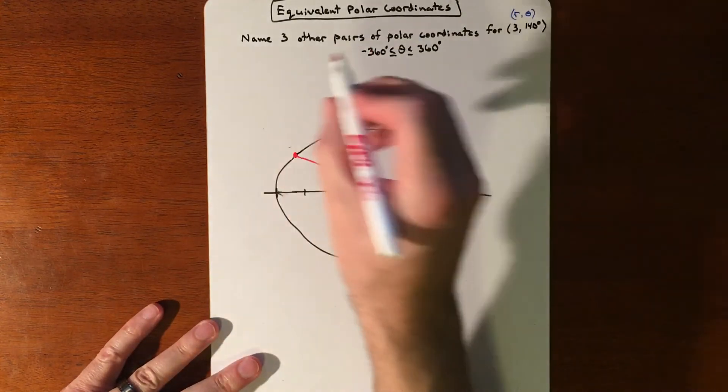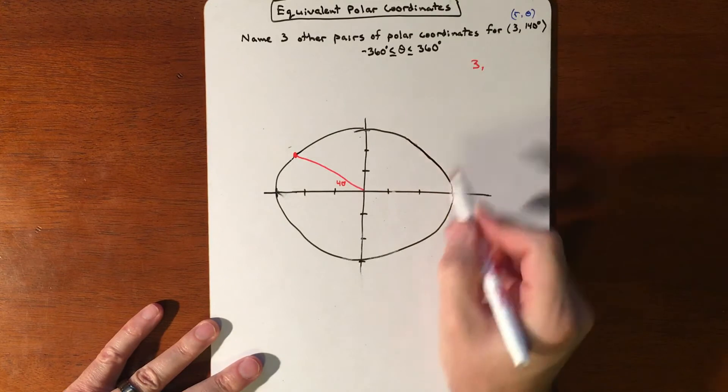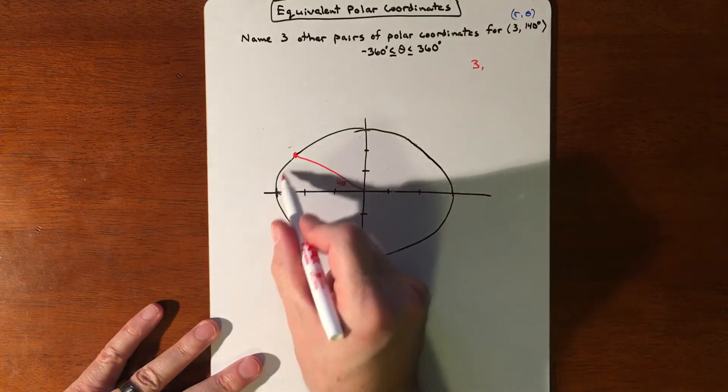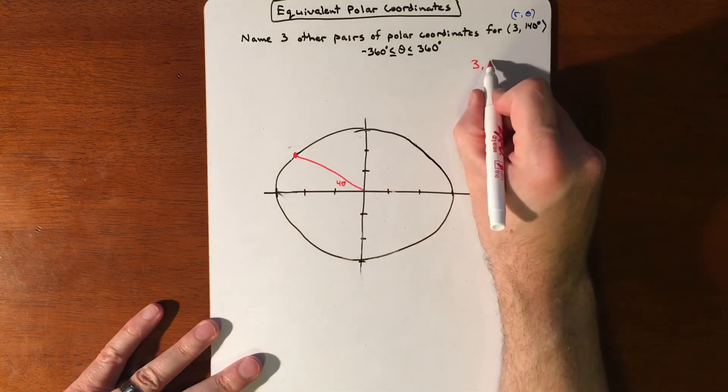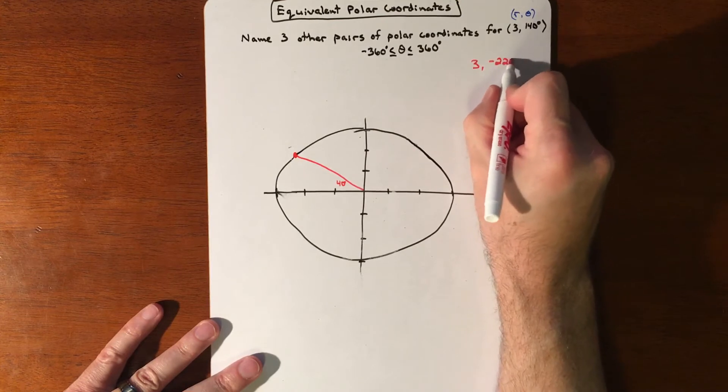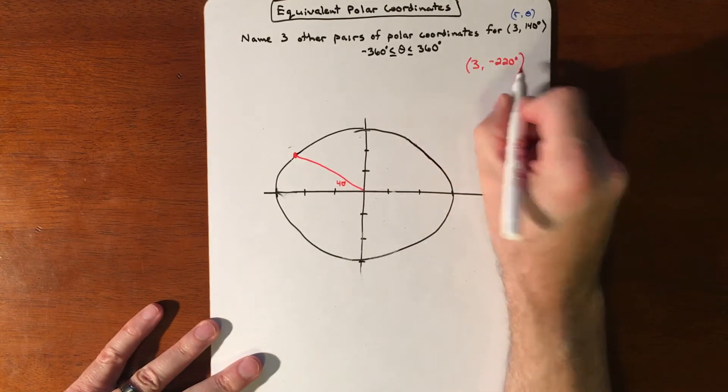So if I go 3 and then I go 180 and another 40, we're talking a negative 220 degrees. So that's one way to get there.